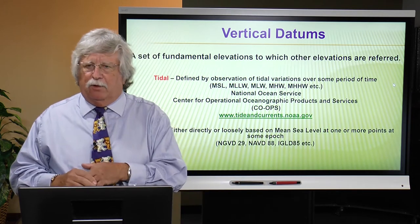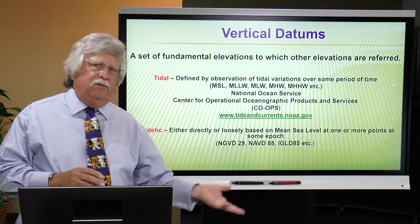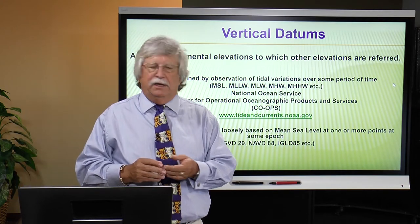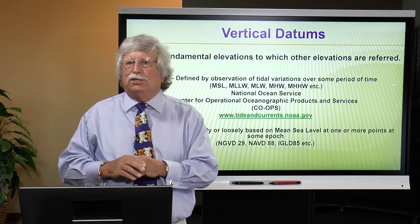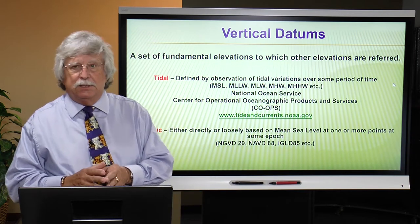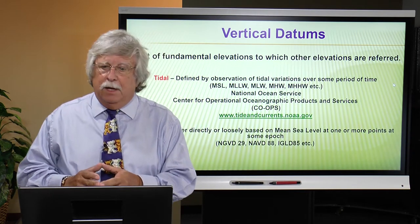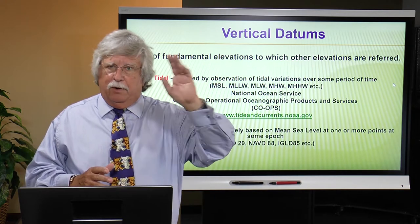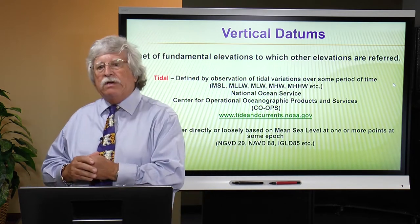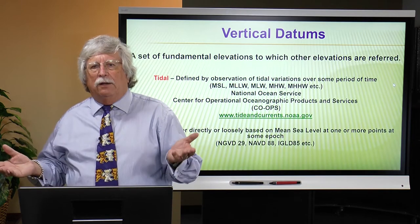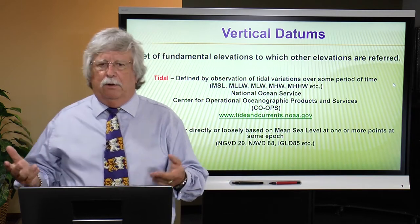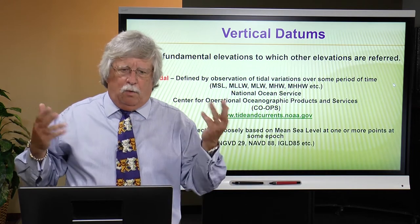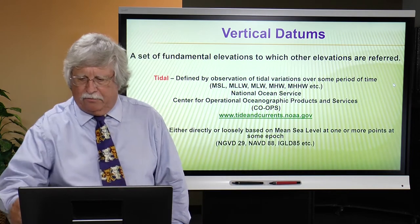Various types of geodetic vertical datums for the United States include the National Geodetic Vertical Datum of 1929, the previous vertical datum; the North American Vertical Datum of 1988, the current national datum for the conterminous United States and Alaska; and IGLD, the International Great Lakes Datum for surveyors and engineers working around the Great Lakes. The various island areas — Puerto Rico and the Virgin Islands, Hawaii, American Samoa, and Guam — all have their own localized vertical datums.